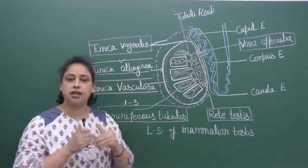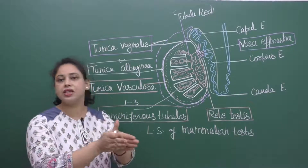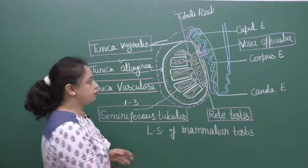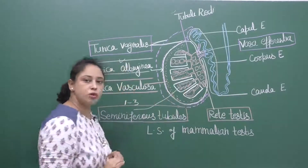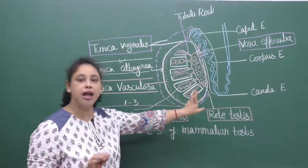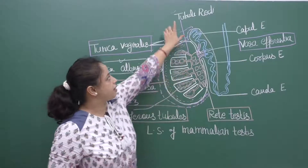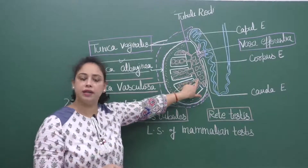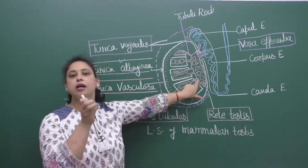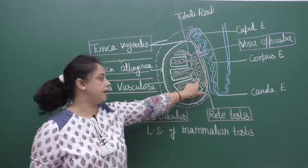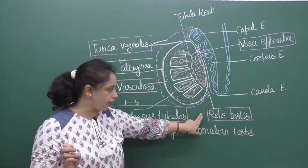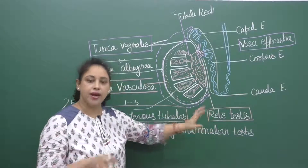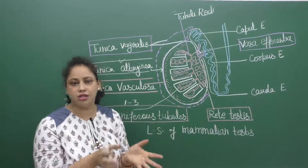The ends of the seminiferous tubules converge and form a straight tubule structure called tubuli recti. You can see here that the seminiferous tubules form a straight structure called tubuli recti, as labeled here. Tubuli recti then open into wide irregular tubules called rete testis.